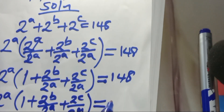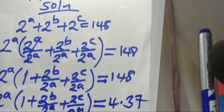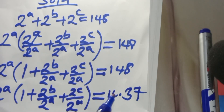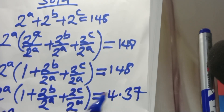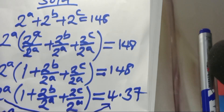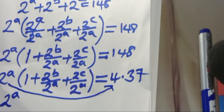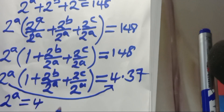Now, 148 can be expressed as 4 multiplied by 37. Given that this is the product of two factors — 4 times 37 — the first part gives us 2 to the power A equal to 4.